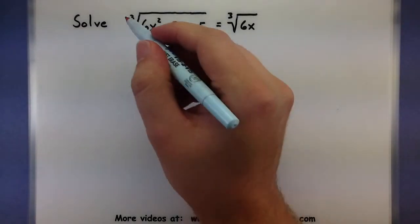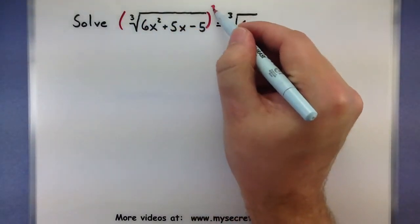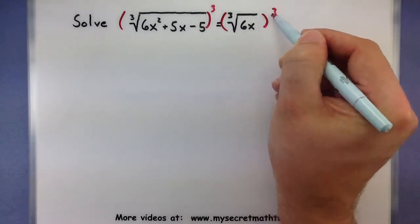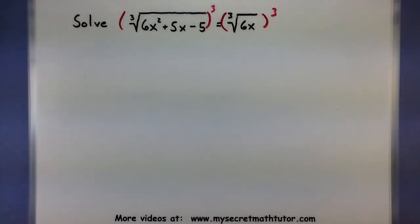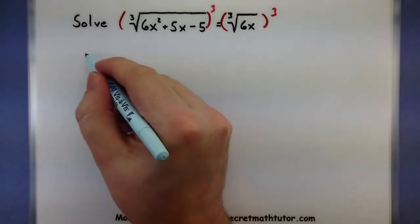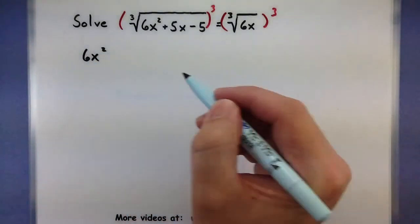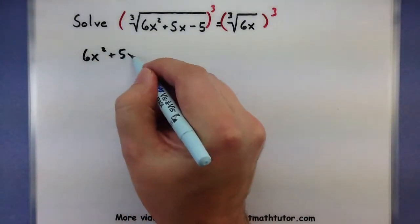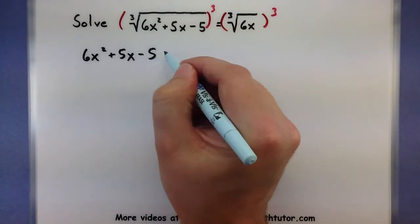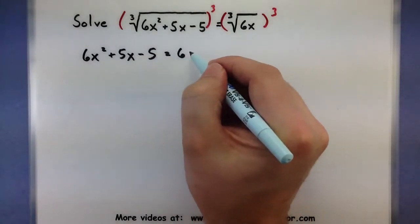So in order to do that, I need to take both sides of this and raise it to the third power. I'll get rid of both of them. All right, let's see what this leaves us. So 6x squared plus 5x minus 5 is all equal to 6x.